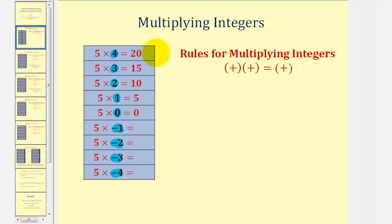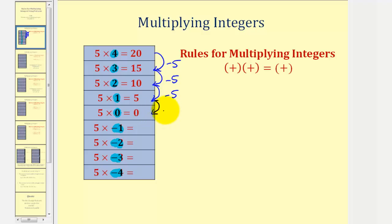Notice that twenty minus five equals fifteen, fifteen minus five equals ten, ten minus five equals five, and five minus five equals zero. So if we continue subtracting five, we should be able to find the remaining products.